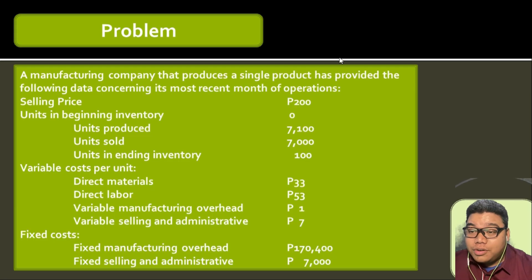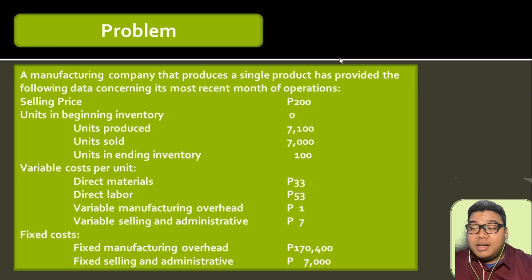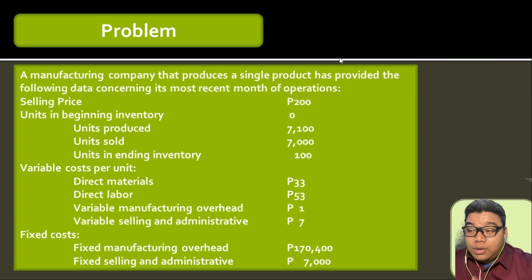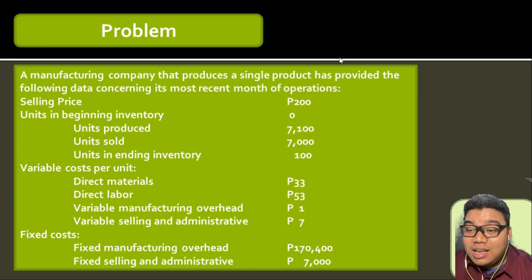A manufacturing company that produces a single product has provided the following data concerning its most recent month of operations. There is no beginning inventory, and we will prepare both the variable and absorption costing statements for this problem.